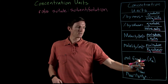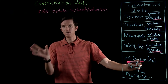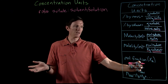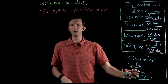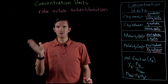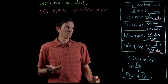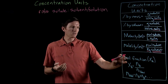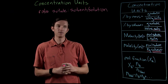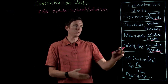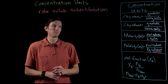Mole fraction is the moles of one substance — usually A, our solute — per the total number of moles, which would include moles of solute, solvent, and maybe other solute particles. These two units, molality and mole fraction, are the ones we're going to use when we talk about colligative properties.